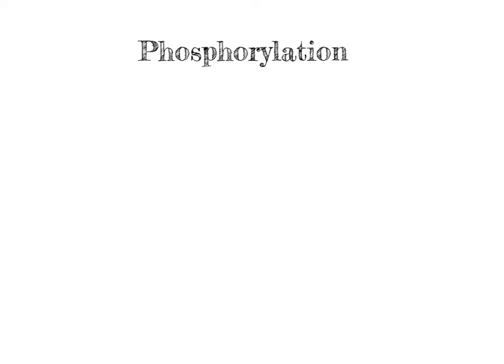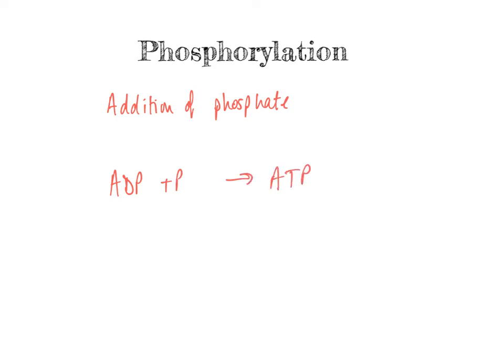The next really important word is phosphorylation, and what that quite literally means is just the addition of phosphate. If you think about it, we're dealing with ATP a lot. So when we have ADP plus P going to ATP to indicate the storage of energy, this process — the addition of the phosphate — means the ADP has been phosphorylated. And there will be various other times in the pathway where we add a phosphate and thus we phosphorylate something.